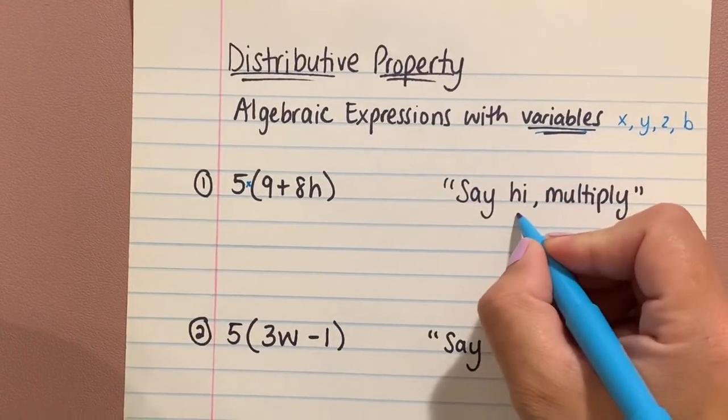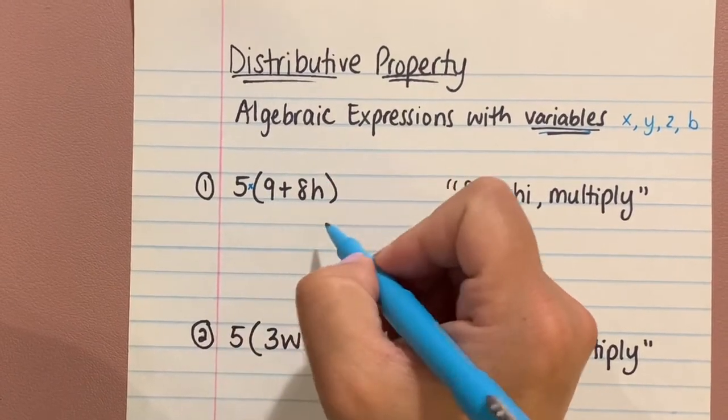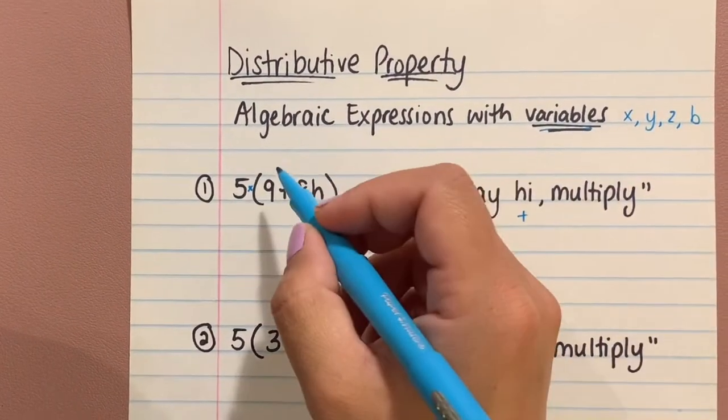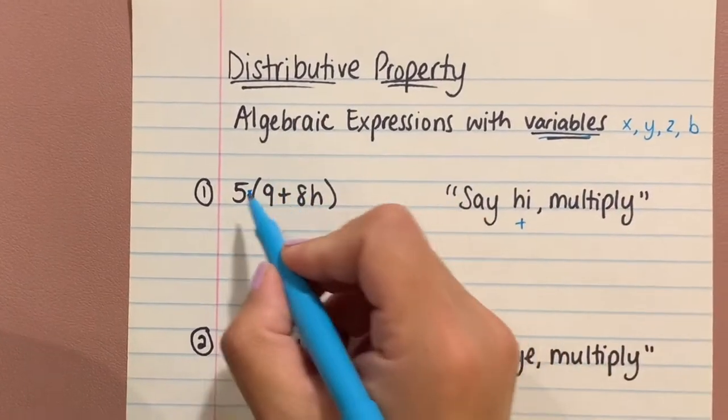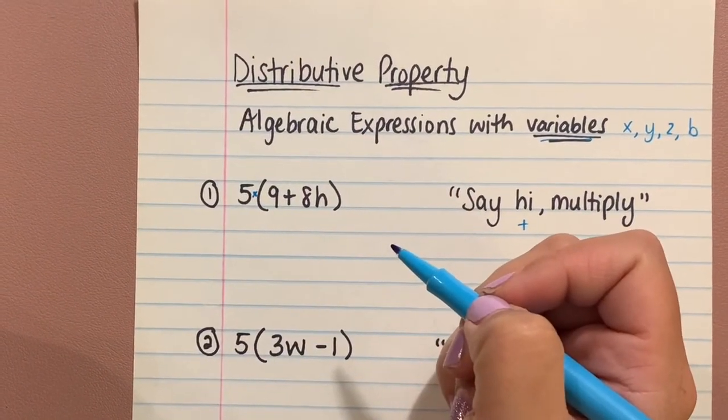The 'hi' just means that it's a plus sign. Like we said, the parentheses is sort of like a house. I always think of it as a house, and the five on the outside wants to get into the house and say hi to everyone that's inside.